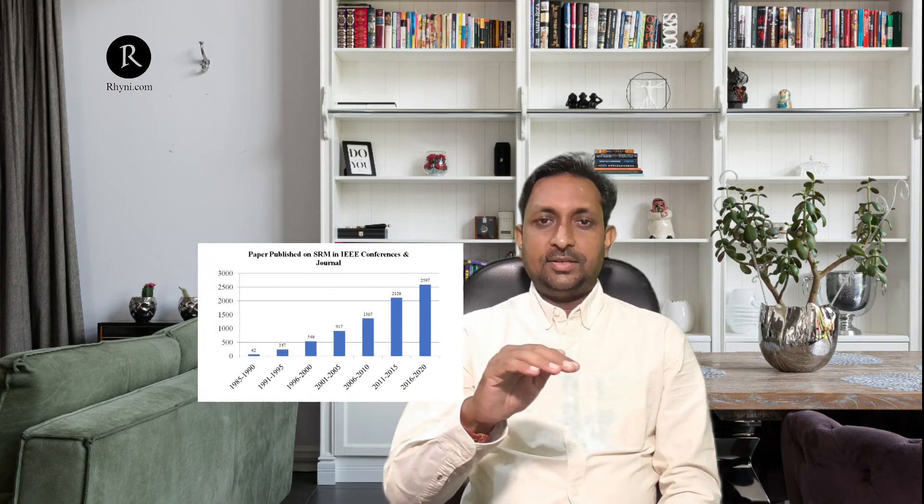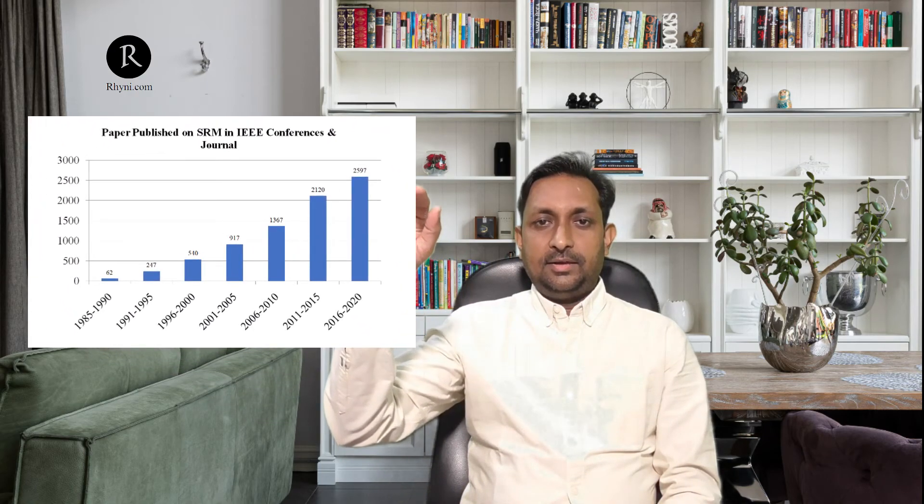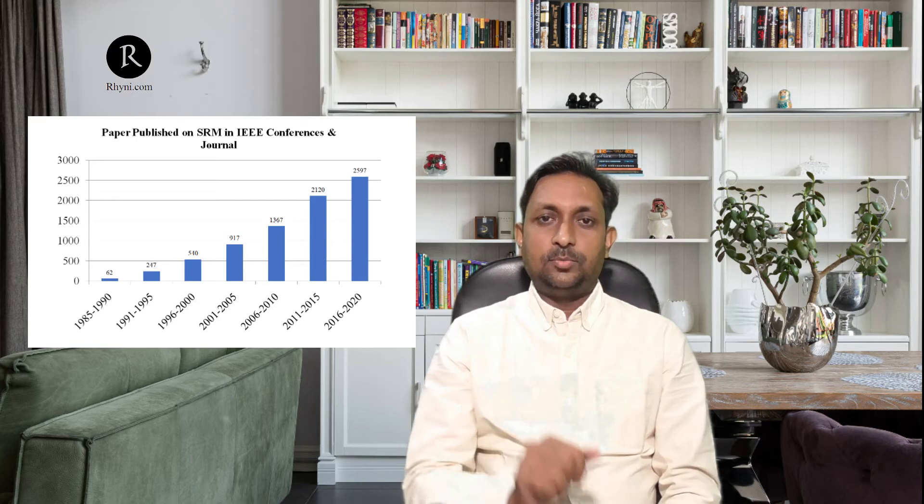For example, looking at the switched reluctance motor, publications for this topic have been increasing exponentially year by year, which shows continuous growth and future demand for this particular topic. If you finalize your topic, do this work to collect publication data and plot the graph. It will also help in your research proposal to validate that your topic is latest and has demand from readers and industries. In the next video, we will discuss about finalizing the title.